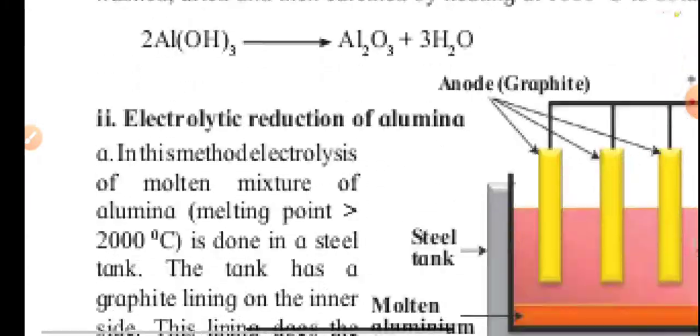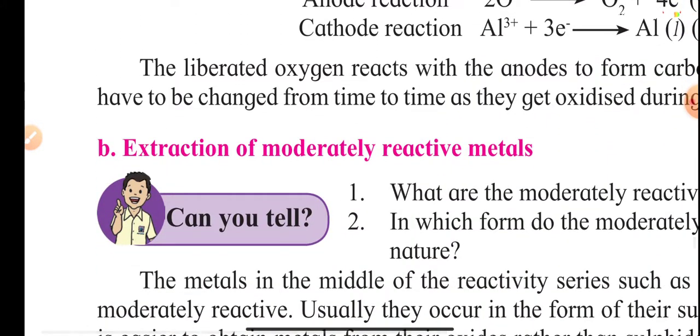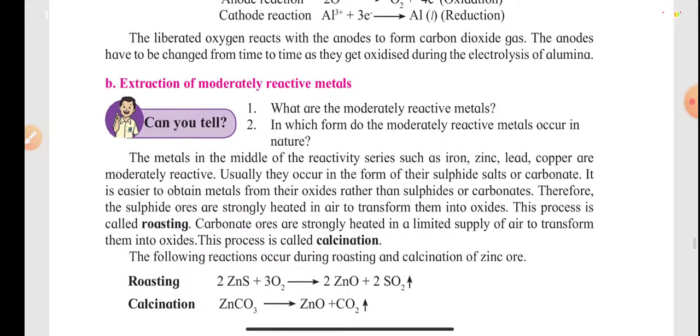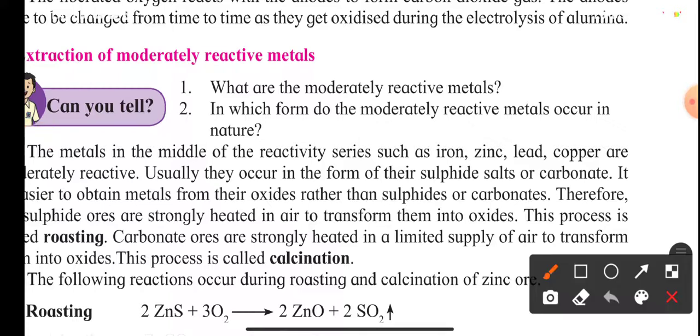Assalamualaikum rahmatullahi wabarakatuh. Welcome to a 10th standard chemistry lecture on metallurgy. We have seen the extraction of highly reactive metals. Now we will move on to the extraction of moderately reactive metals. Those metals that come in the middle of the reactivity series are called moderately reactive metals, and they are iron, zinc, lead, and copper.